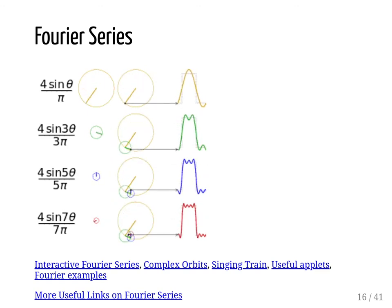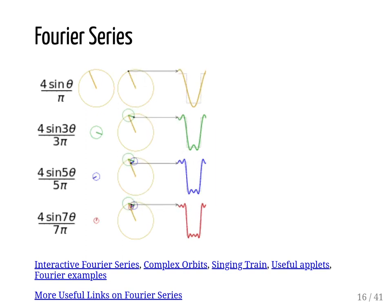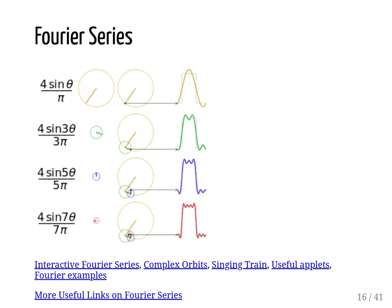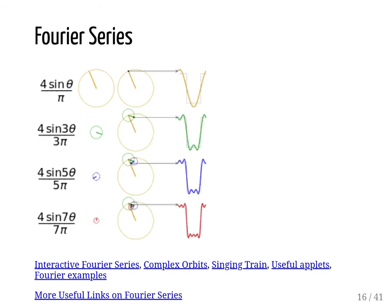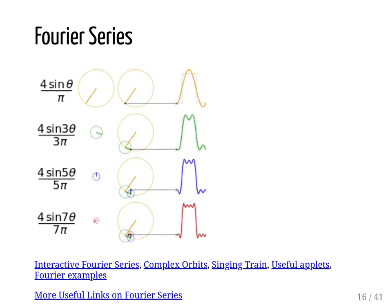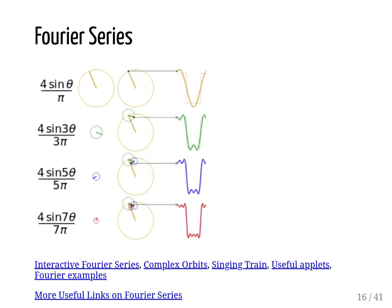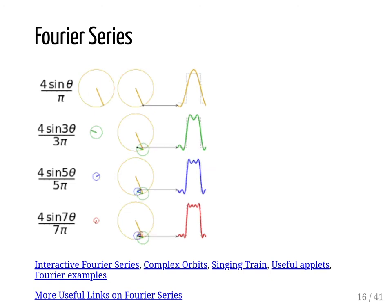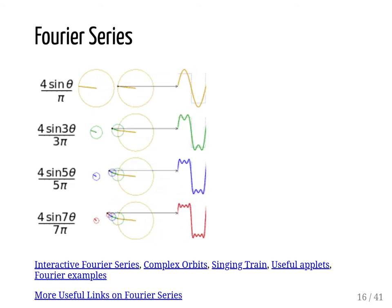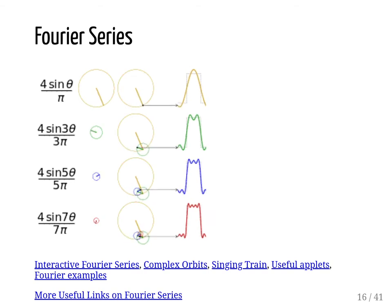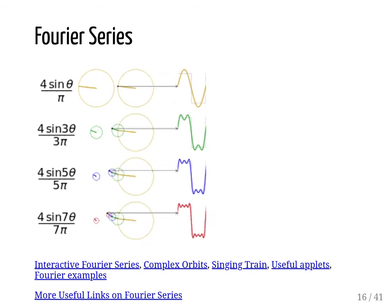The last one includes the seventh component, so there are four circles running at different frequencies. When it goes up and down, the magnitudes of all those components are in phase and it quickly goes from positive to negative. Of course, if you add multiple harmonics, you get closer and closer to the square waveform.